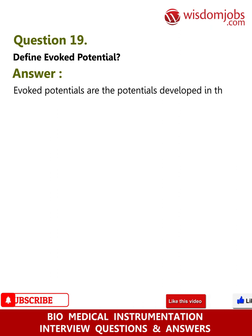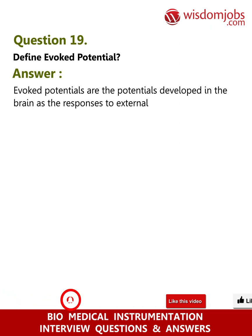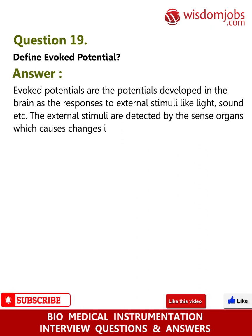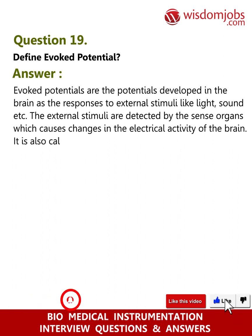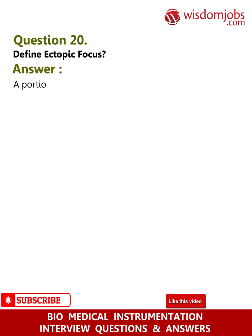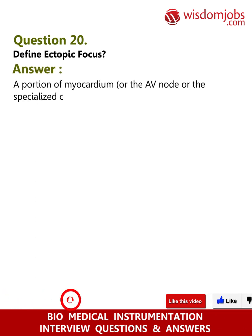Question 19: Define evoked potential. Answer: Evoked potentials are the potentials developed in the brain as responses to external stimuli like light, sound, etc. The external stimuli are detected by the sense organs, which causes changes in the electrical activity of the brain. It is also called event-related potential.